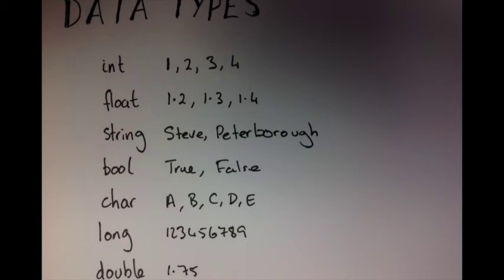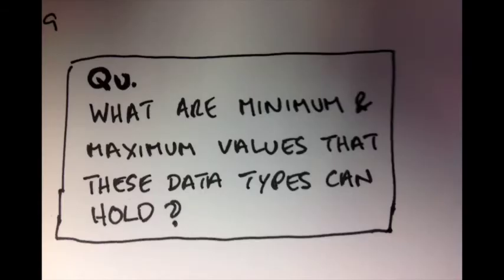So the different data types we can have: we can have integers which are whole numbers, we can have floats which are decimals, we can have strings which are words that we can store, we have booleans which are true or false values, we can have characters which are single letters, we can have longs which are even bigger whole numbers, we can have doubles even bigger decimal numbers, and we can have even decimals as well.